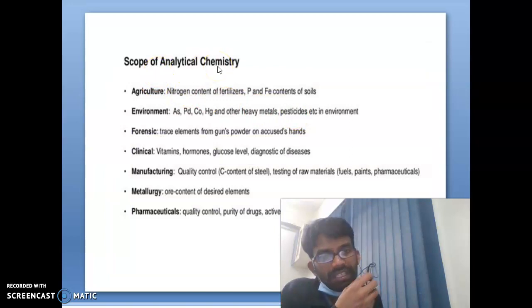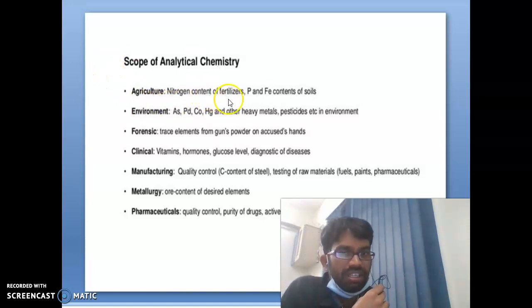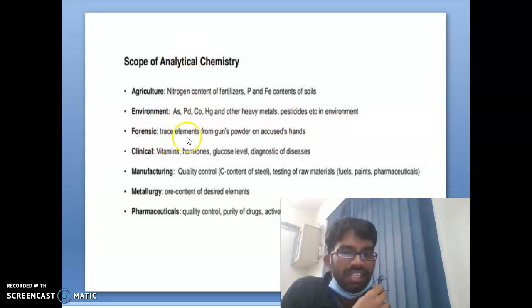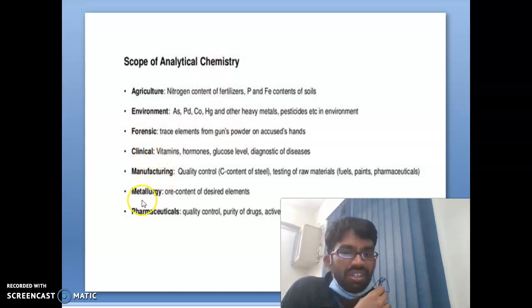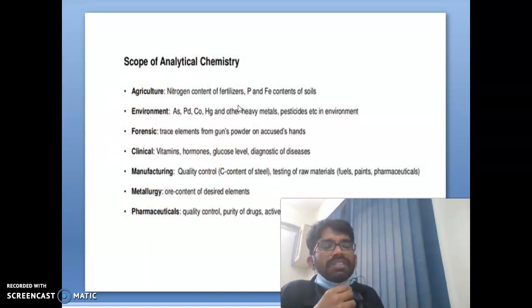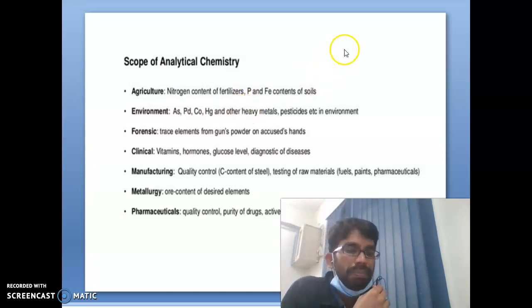What is the scope of analytical chemistry? Every field uses analytical techniques. In agriculture: nitrogen concentration in fertilizers, phosphorus and iron content in soil. In environmental science, forensic science, clinical science, manufacturing and metallurgy, and pharmaceutical industries — every area uses analytical chemistry for various purposes.